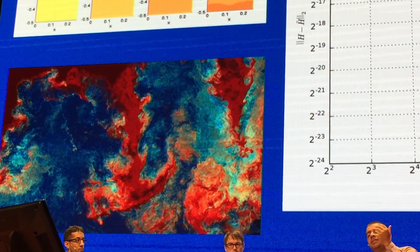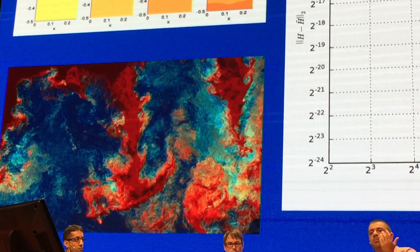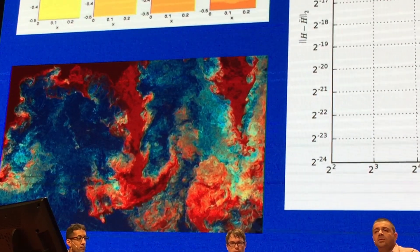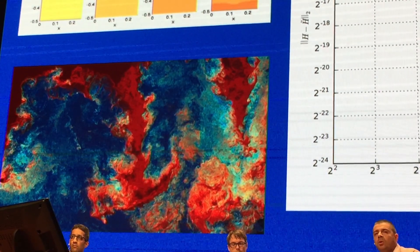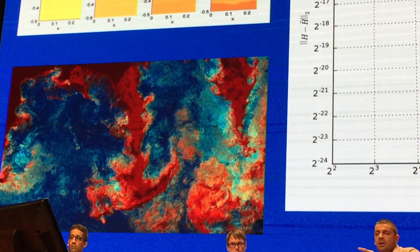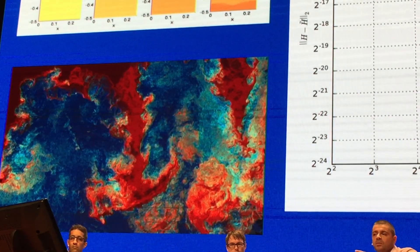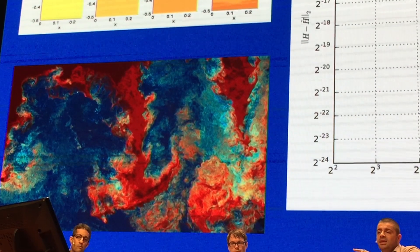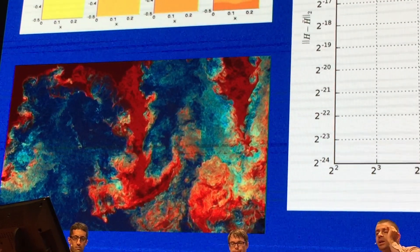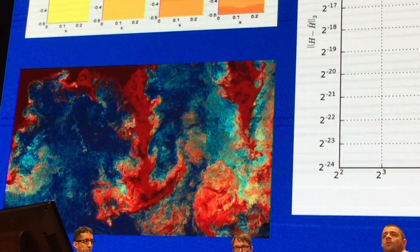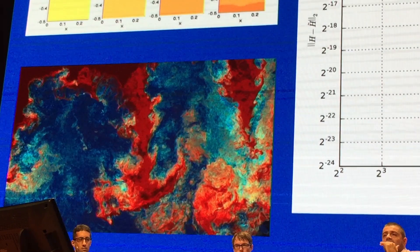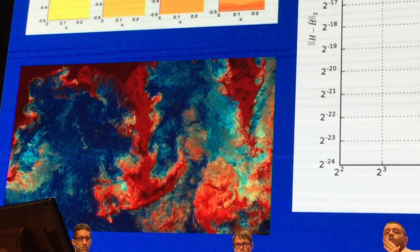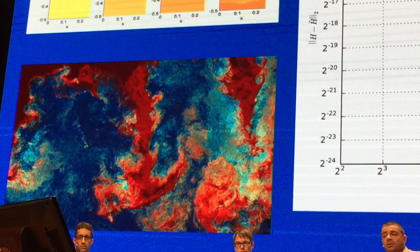If you increase the accuracy of your solver, you have to pay something — there is no free lunch. But what I'm showing here with the red and blue circles is that going from a certain order scheme to a higher order scheme, we basically use the same amount of time to get the solution but achieve a more accurate result.